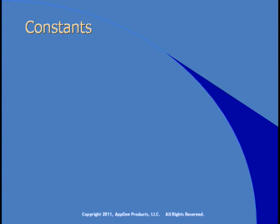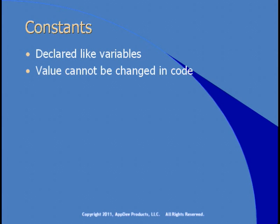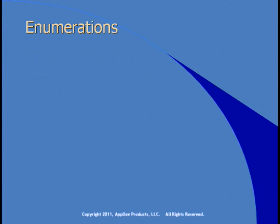Let's take a look at some additional ways you can store information. These aren't literally variables, but they serve a similar purpose as a place to store information. Constants get declared like variables, but they differ in that their value cannot be changed in code — you can think of them as read-only variables. A perfect candidate for a constant would be, for example, the value of pi. You define it once, it doesn't change, and then you can use it over and over again in your code by referring to the name of the constant.